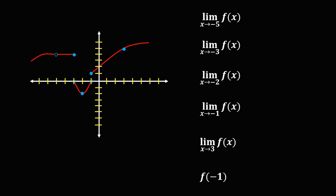Then for this given, we have the graph and we have this limit. To find the value of the limit of the function as x approaches negative 5, x is negative 5. Since we have both the left side and the right side, therefore the limit is equal to positive 4.